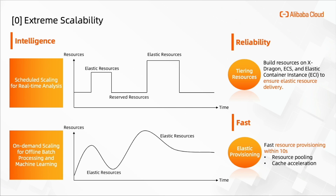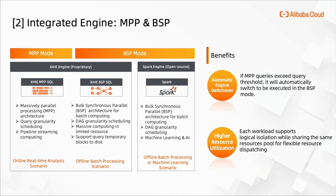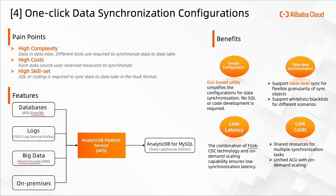We use a tiered resource hierarchy to build resources on X-Dragons, ES-ECS, and Elastic Container Instances, ECIs, to ensure elastic resource delivery. We are also using cache acceleration and resource pooling techniques to ensure scaled resources take effect within 10 seconds. Aside from the one data copy, the XI-HE interactive computing engine also contributes to support for both batch processing and real-time analysis scenarios. The XI-HE engine provides both the MPP and the BSP mode with automatic switchovers. If MPP queries exceed the query threshold, they will automatically switch to be executed in BSP mode. Each workload supports logical isolation while sharing the same resource pool for flexible resource dispatching.